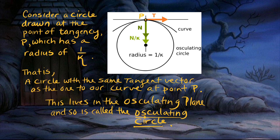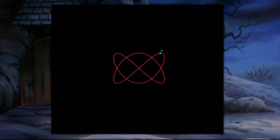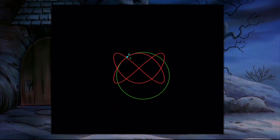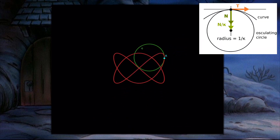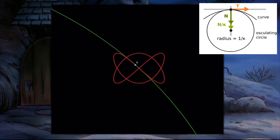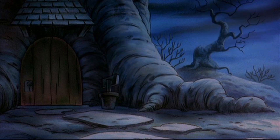You can think of the osculating plane as containing a circle that measures the curvature of the curve at a particular point. Illustrating this with a curvy path, we observe that the osculating circle gets smaller when the curvature is great, and when the curve is more flat the circle opens up. This is directly connected to the magnitude of the normal vector changing as we move along the curve. Therefore, the curvature of a curve is connected to the radius of the osculating circle.